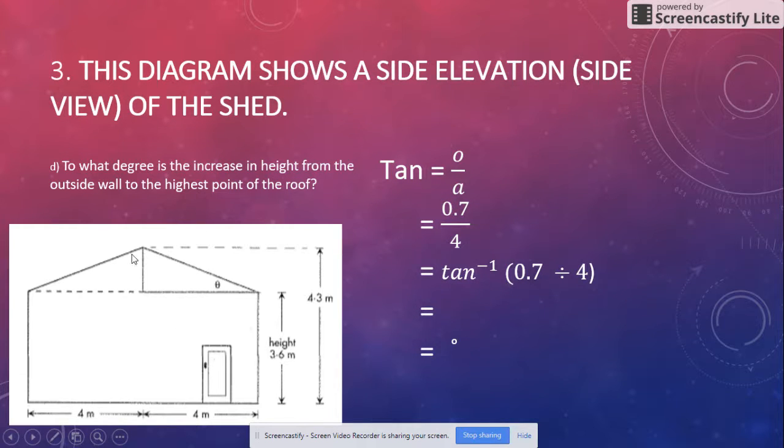Then we go 0.7, so our opposite is here, our adjacent is there. 0.7 over 4. Then we're doing tan⁻¹, because we want to know what the degree is. 0.7 divided by 4 equals. Then bring it to the nearest whole number with a degree sign on it.